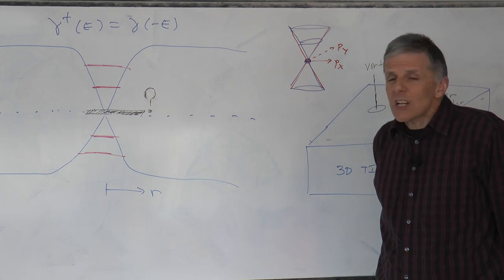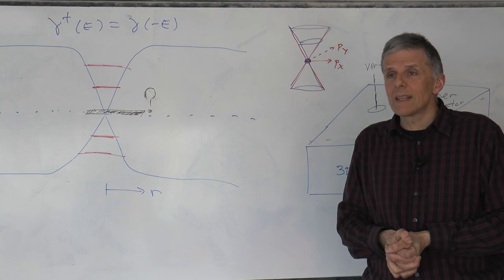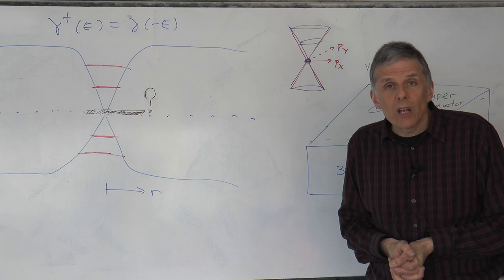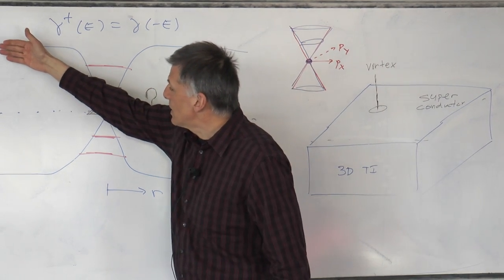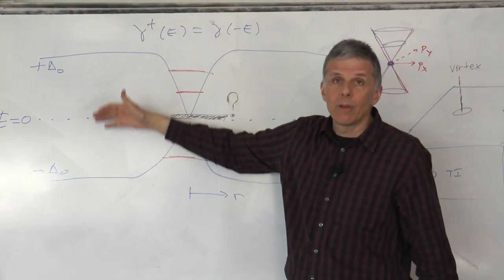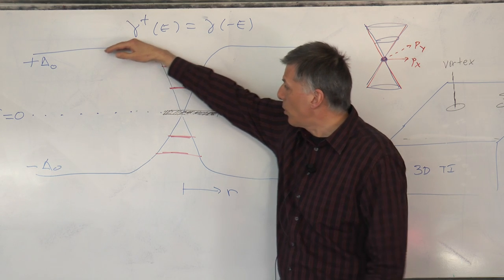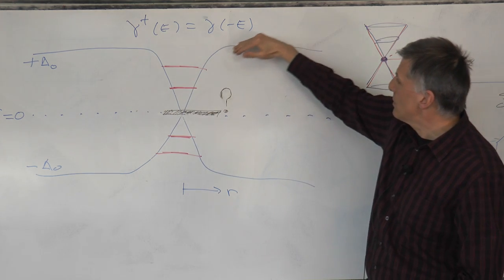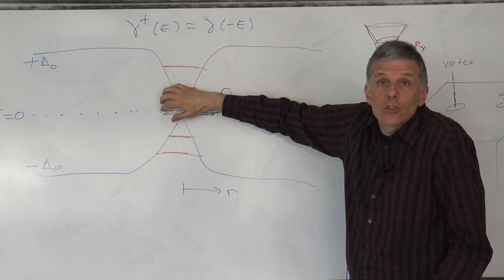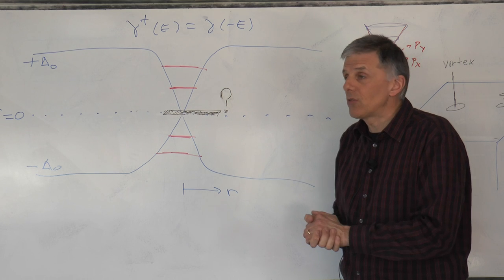This actually started in the early days of superconductivity when it was realized that vortices in superconductors can bind particles. So if this is the sketch of the excitation gap in a superconductor, a vortex is a place where the gap closes. The gap goes to zero, so there's this region here, like a hole in the superconductor. In this hole there's no gap, so particles can be trapped inside.